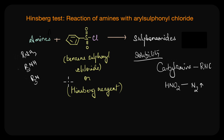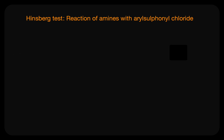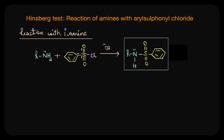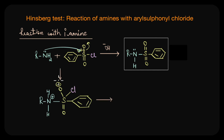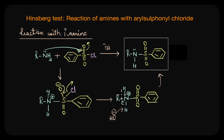Let's look at the reaction of the Hinzberg reagent with a primary amine. When primary amines react with benzene sulfonyl chloride, there's a nucleophilic attack — the lone pair of electrons on the nitrogen atom attacks the sulfur atom of benzene sulfonyl chloride, because sulfur is electron deficient due to the strongly electron-withdrawing oxygen atoms and the chlorine atom, giving sulfur a partial positive charge. The double bond gets restored, the chloride ion is eliminated, and in alkaline medium a deprotonation step gives us the final sulfonamide product: N-alkyl benzene sulfonamide.